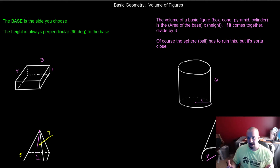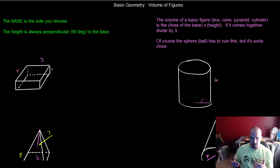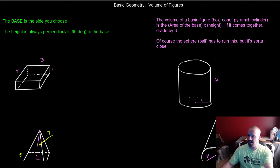To keep in mind throughout this whole process: the base is the side that you choose, although in some instances you don't really want to change the base because it makes life easy. And the height is always 90 degrees to the base — it's perpendicular to the base.